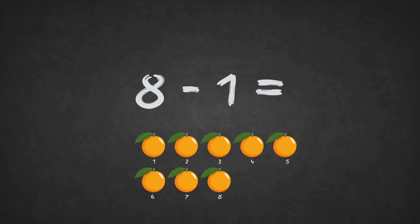8 minus 1 equals 1, 2, 3, 4, 5, 6, 7. The answer is 7.